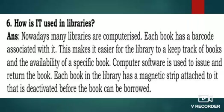Barcode एक striped code होता है जिसके ऊपर उस product या item से related सारी information store की जाती है। For example, market का कोई भी product — साबुन या biscuit — उसके cover के ऊपर एक white and black lining वाला barcode छोटे से square या rectangle bracket के अंदर लगा होता है। उसे read करने के लिए एक machine आती है जिसे हम barcode reader बोलते हैं।